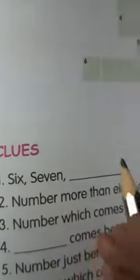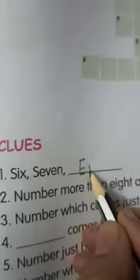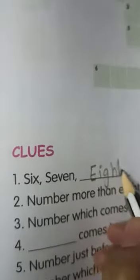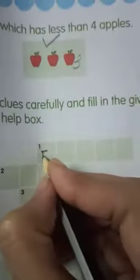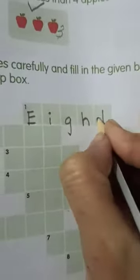Here, we have one puzzle. And it also gives clues. We have to read the clues carefully. And we have to fill the boxes using this help box. The first clue: 6, 7, 8. E, I, G, H, T. 8. So, we have to write in the first one. 8. E, I, G, H, T. 8.